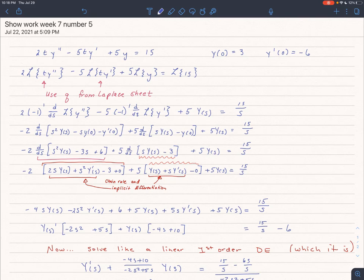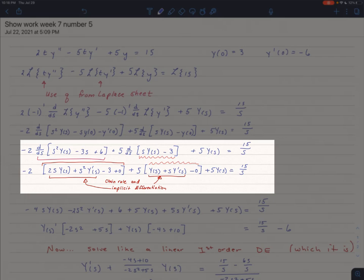So our next step is to figure out what the Laplace transform of y double prime and y prime are, and that's right here. And now we're going to take the derivative of that with respect to s. Now we're going to have to remember both the chain rule and implicit differentiation from probably calc 1.